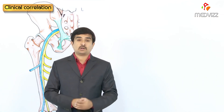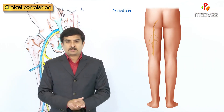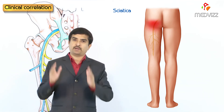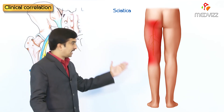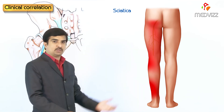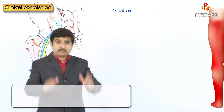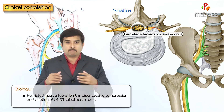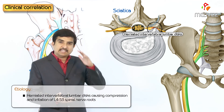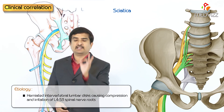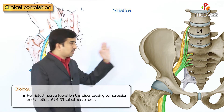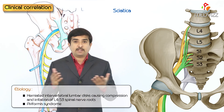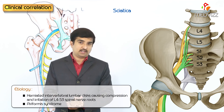Sciatica is a clinical condition characterized by shooting pain felt along the course and distribution of the sciatic nerve. It occurs mainly due to herniated intervertebral lumbar discs, which cause compression and irritation of the spinal nerve roots from L4 to S3. It is also seen in piriformis syndrome, which we already discussed.